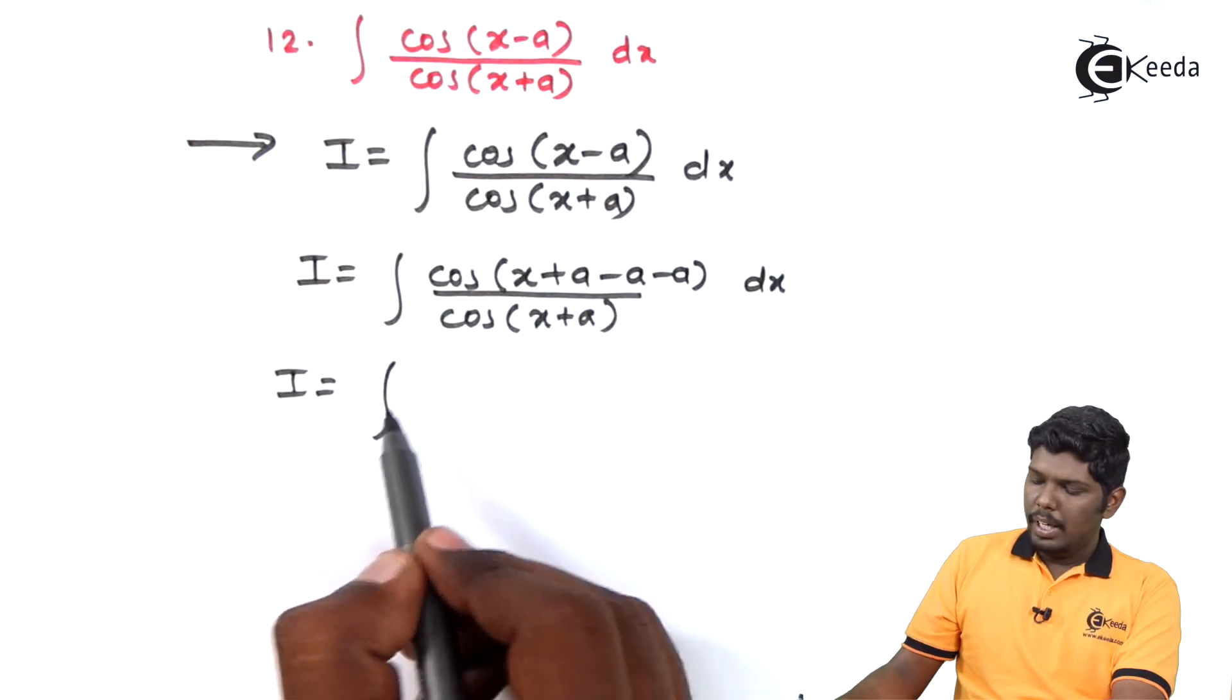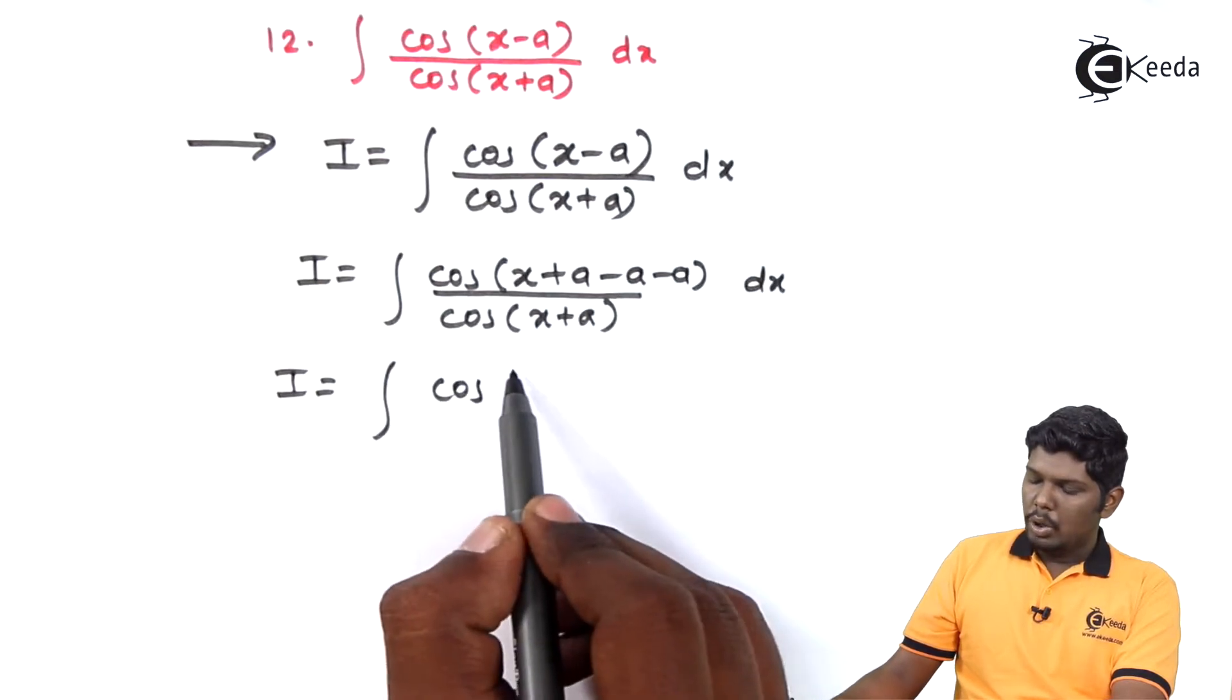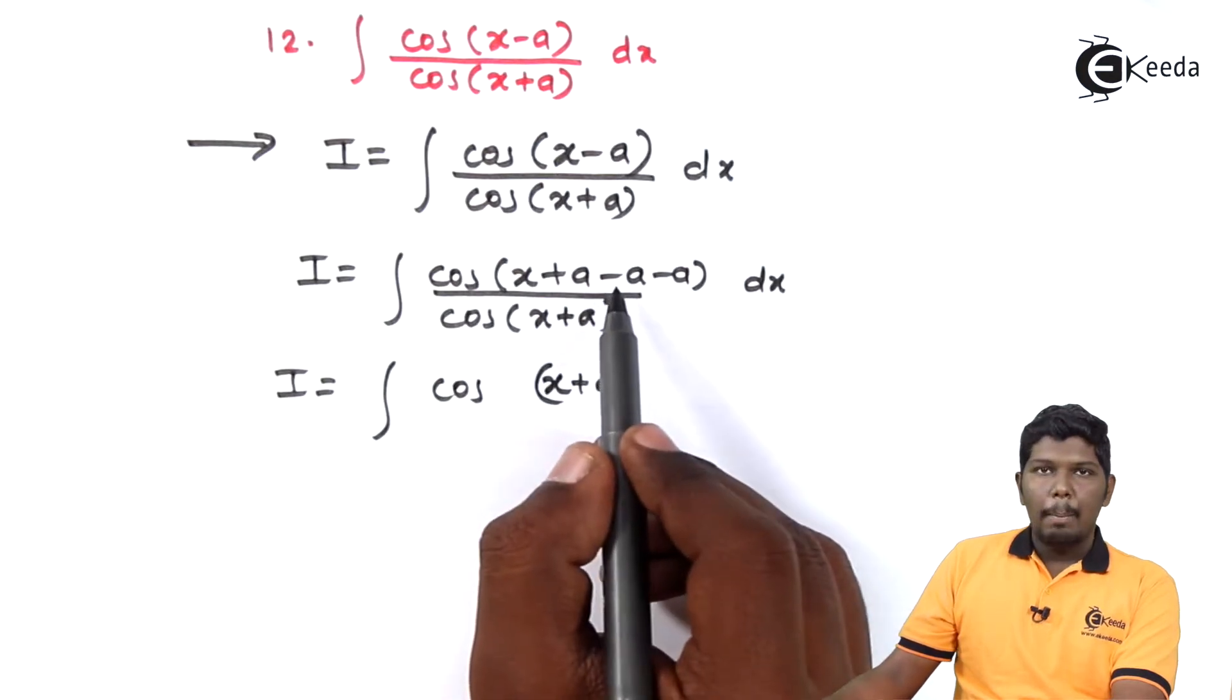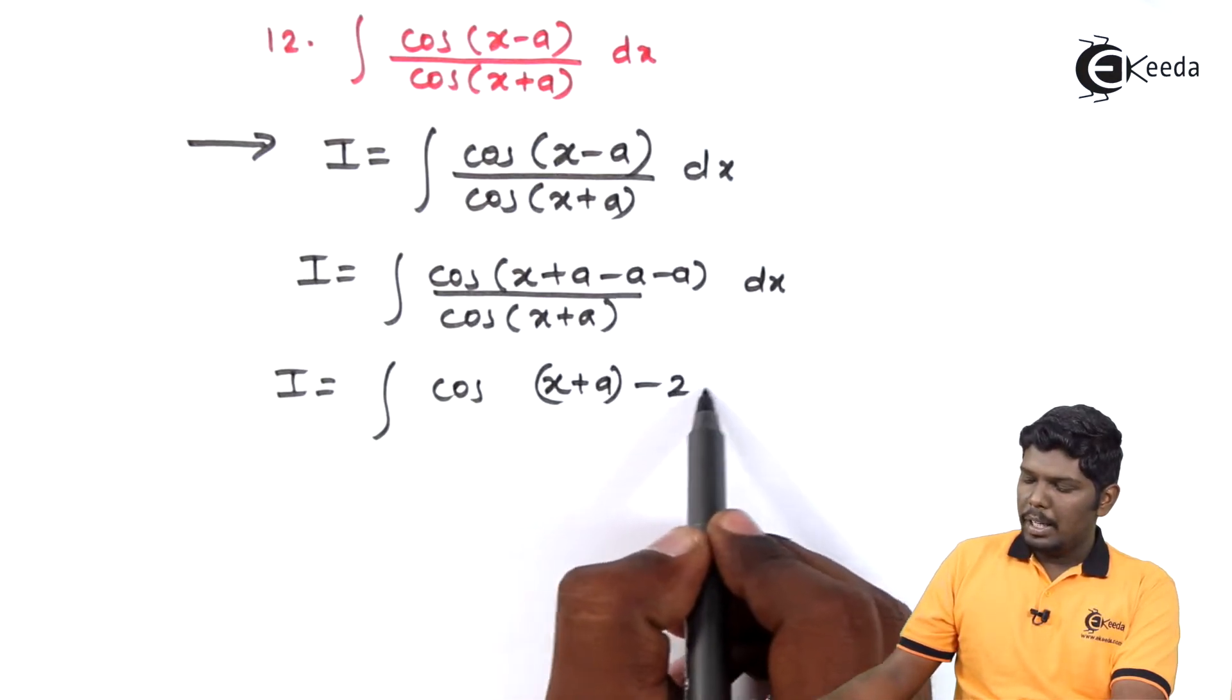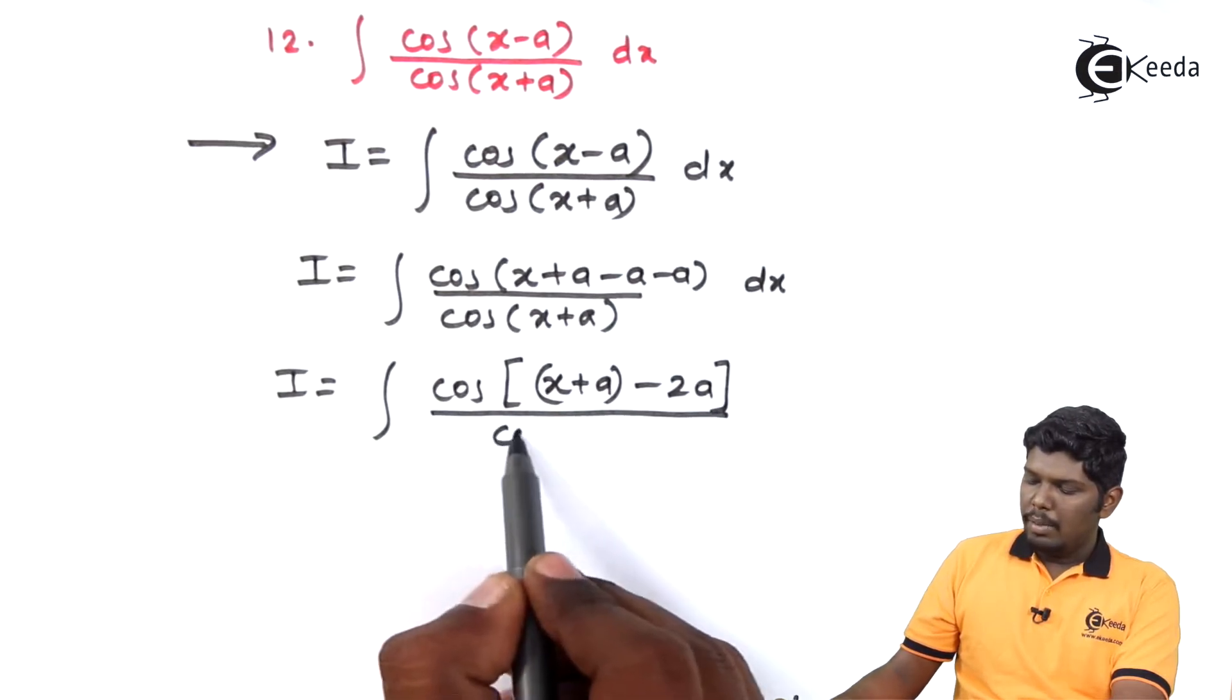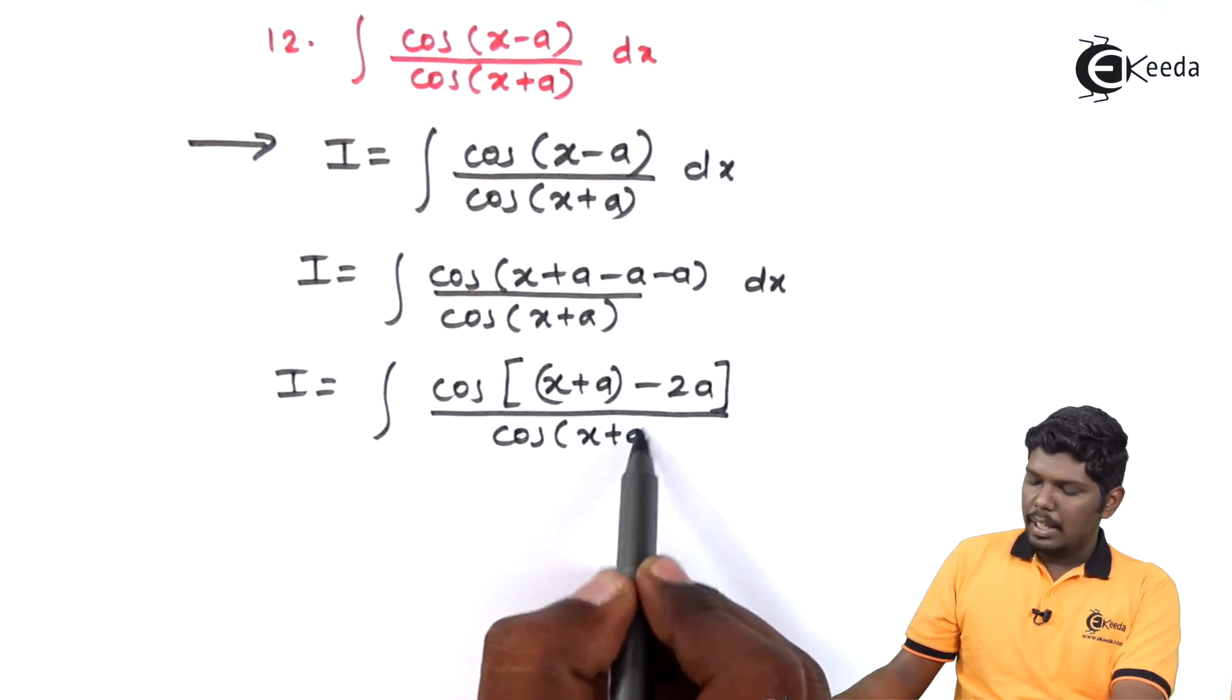I is equal to integral cos of x plus a minus a, minus a will give you minus 2a, upon we have cos of x plus a.